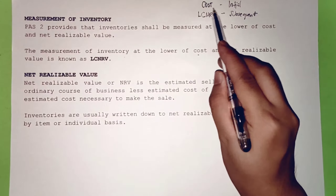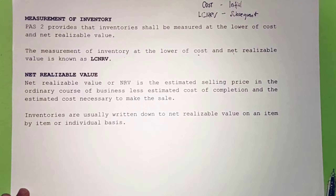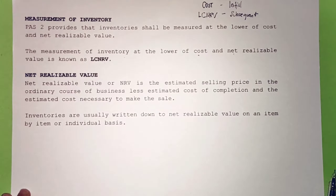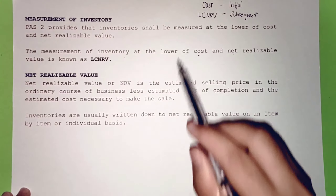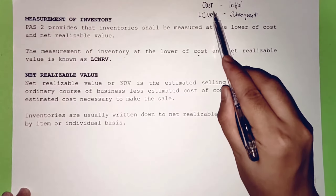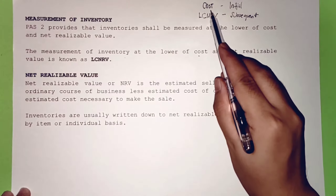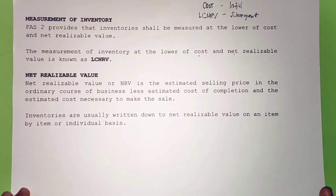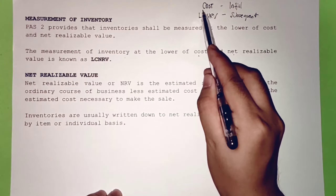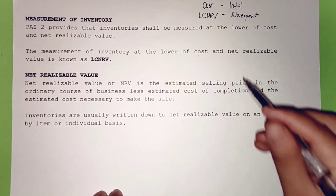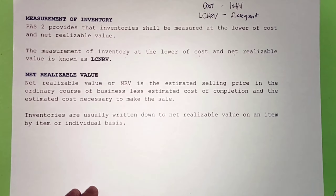The cost mentioned in the initial measurement of inventory includes: cost of purchase, cost of conversion, and other costs needed in bringing the inventory to its present location and condition. That is the cost referred to in the initial measurement of inventory.